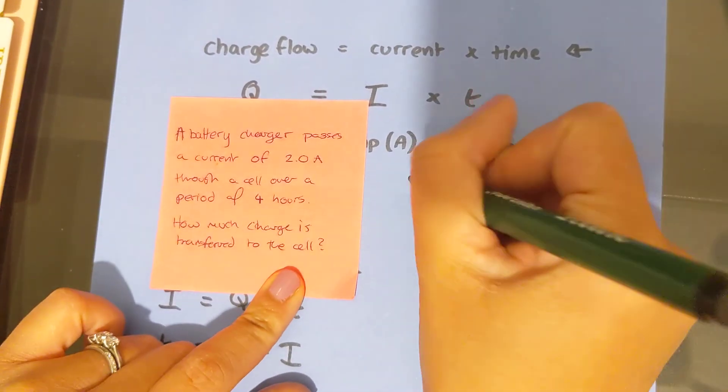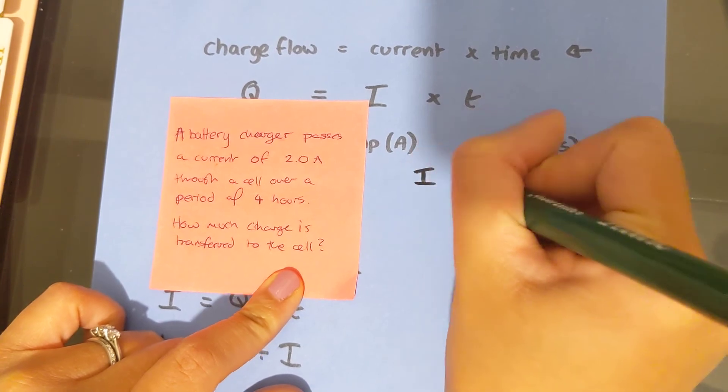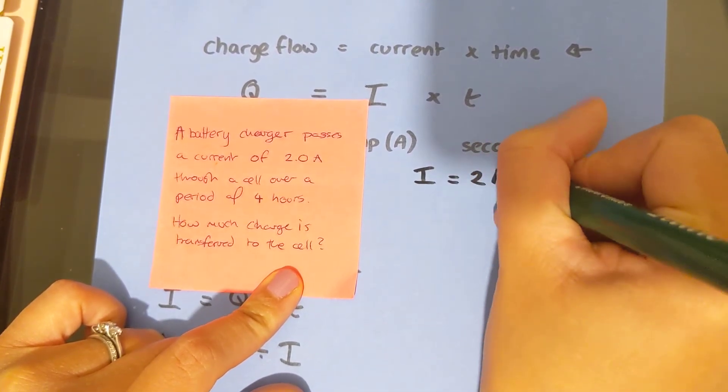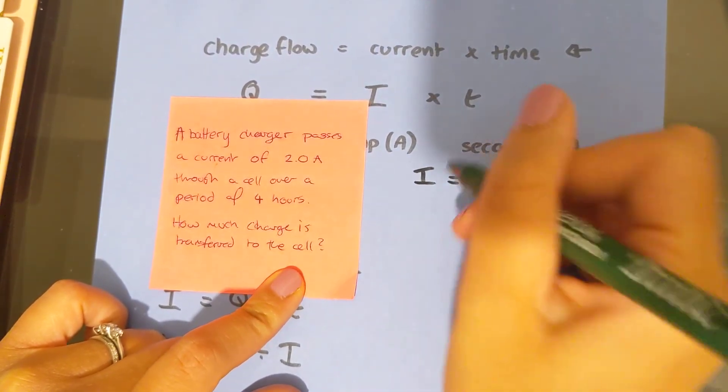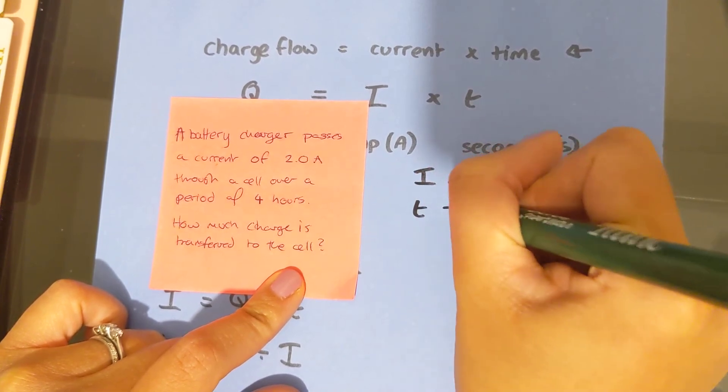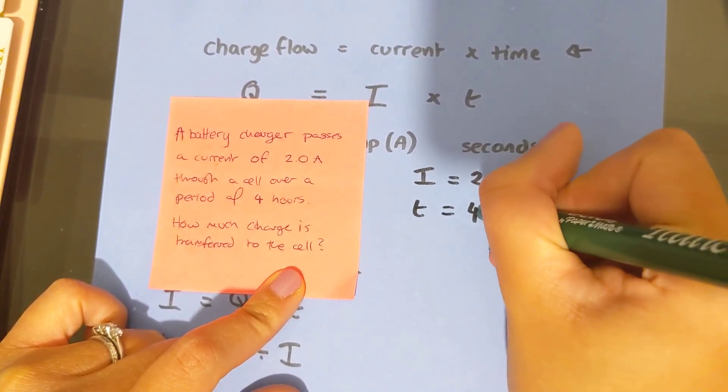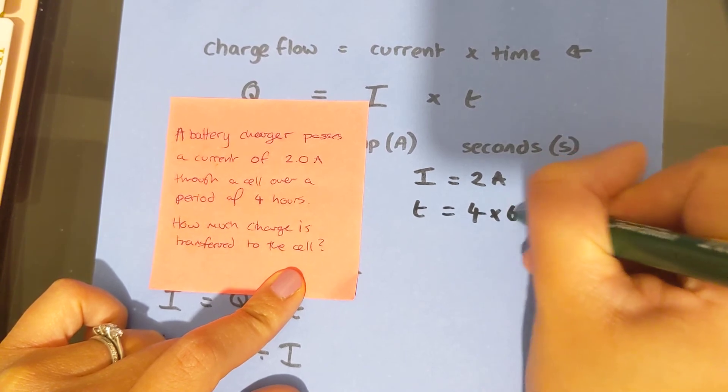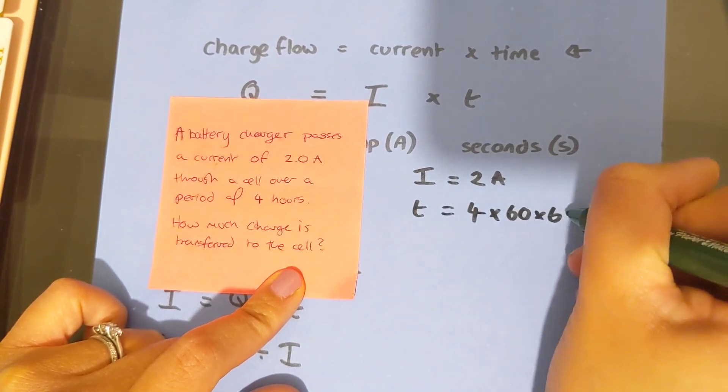So the current. We've got the current is two amps. We've got time is four hours. So that's going to be four times 60 minutes times 60 seconds.